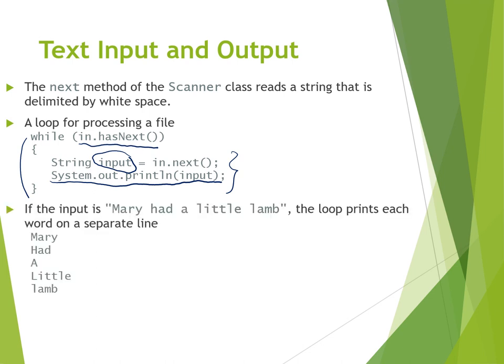So if the input is "Mary had a little lamp", the loop prints out: Mary, had, a, little, lamp — each word on a separate line because we use `println`, which adds a new line after each input.